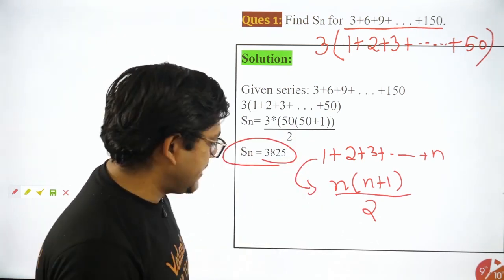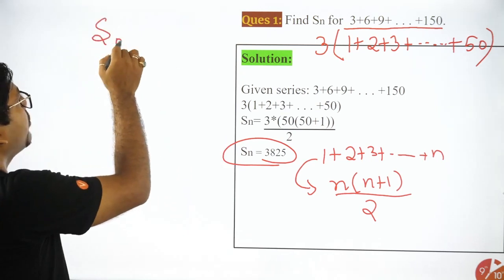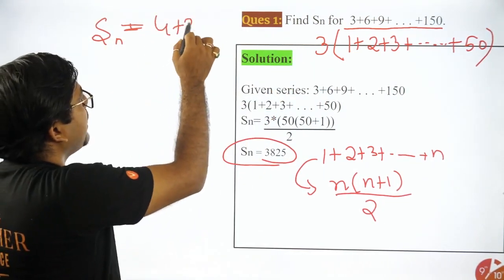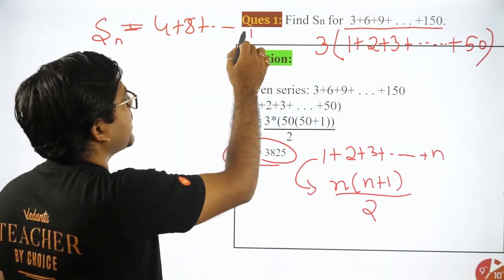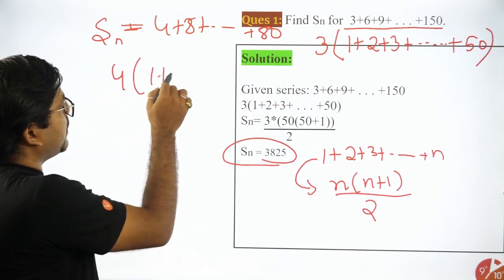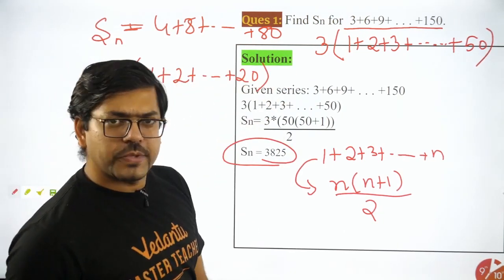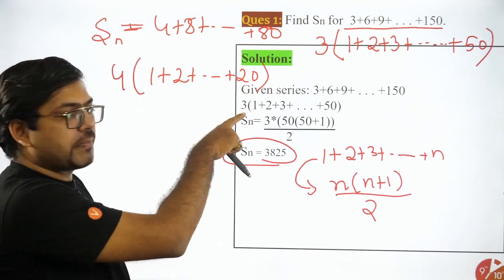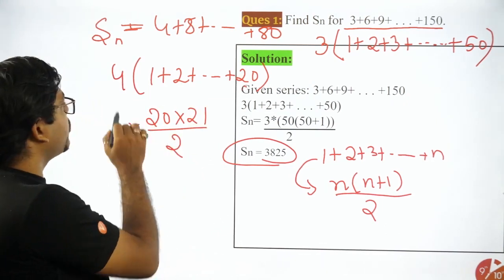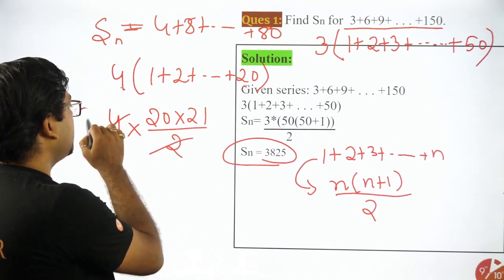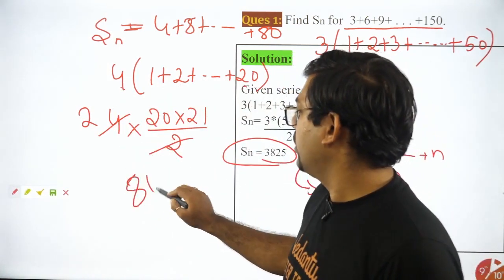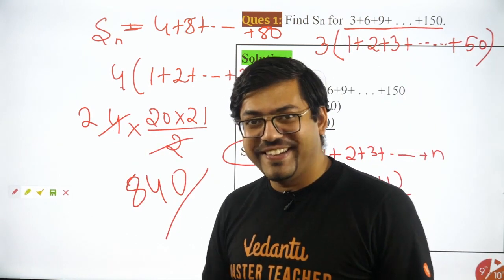Let me show you one more example. If the question says: find the sum of first 20 multiples of 4 — that is 4 + 8 + … up to 80 (20 multiples). Take out 4 common: 4 × (1 + 2 + … + 20). Sum of first 20 natural numbers = 20×21/2. Multiply by 4: 4 × 20 × 21 / 2 = 4 × 210 = 840. Super easy.